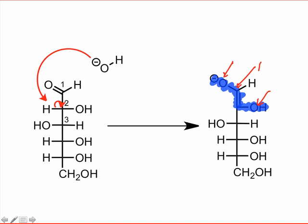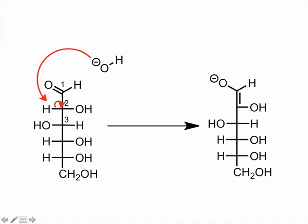Thus, we would expect both carbons of the double bond to potentially be nucleophilic. This opens the door to two possible mechanistic pathways, which correspond to the two new products we observe — mannose and fructose.